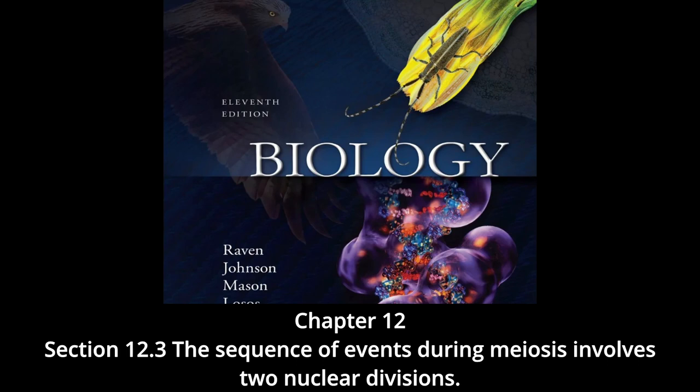Chiasma formation: evidence of crossing over can often be seen under the light microscope as an X-shaped structure known as a chiasma (Greek: cross; plural chiasmata). The presence of a chiasma indicates that two chromatids — one from each homolog — have exchanged parts. Like small rings moving down two strands of rope, the chiasmata move to the end of the chromosome arm as the homologous chromosomes separate.